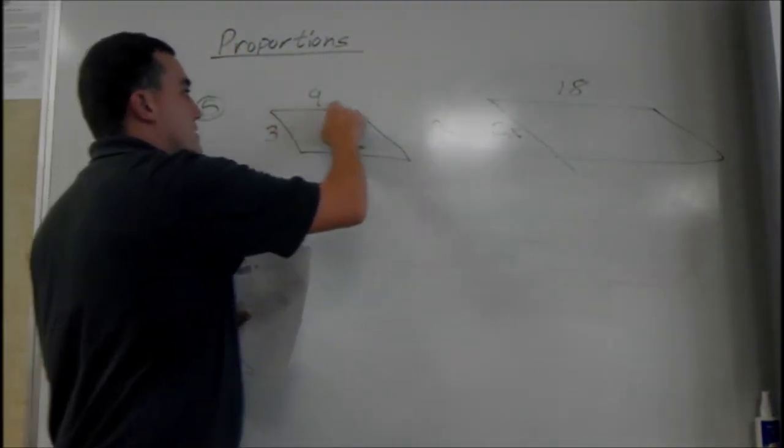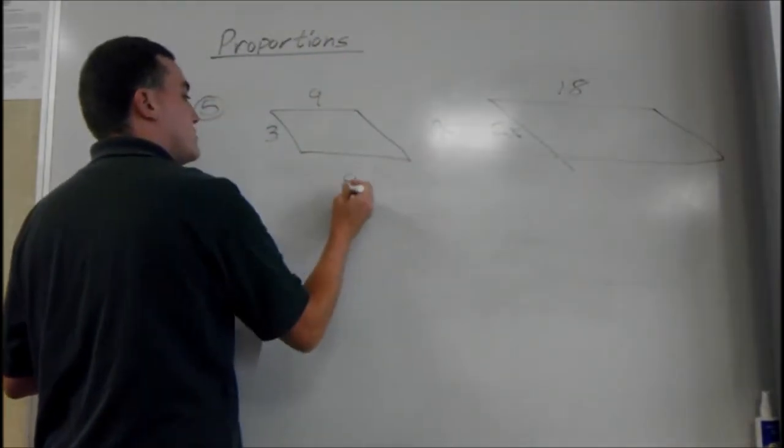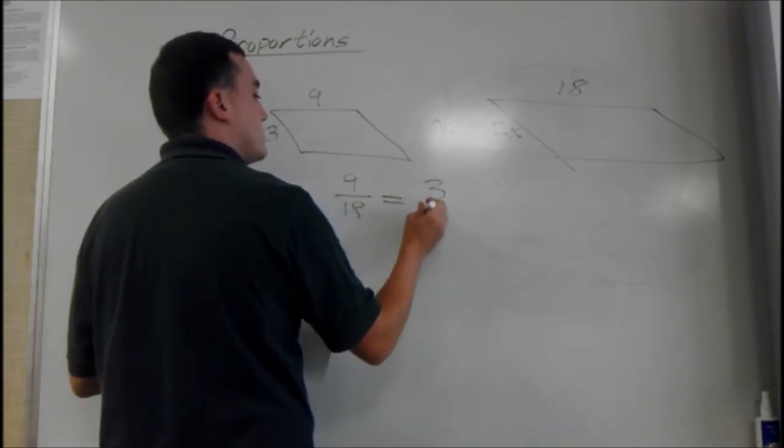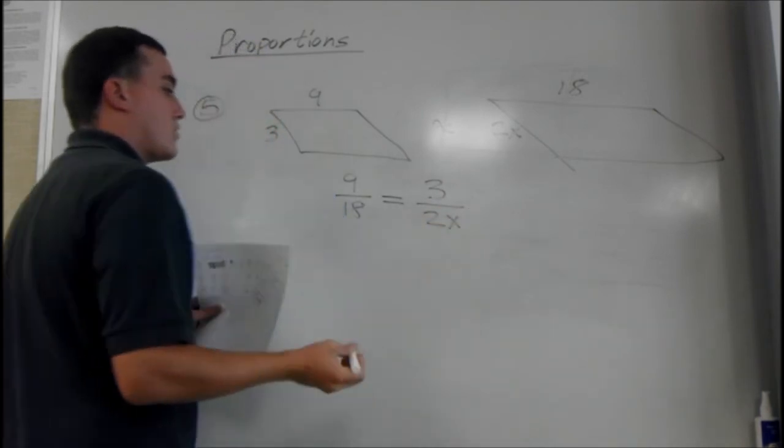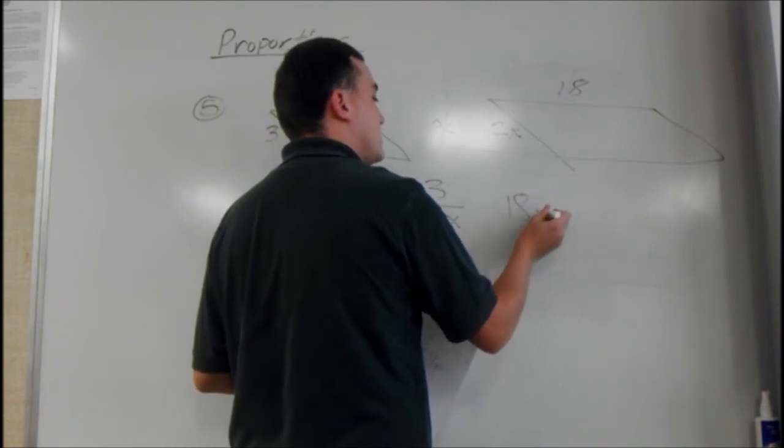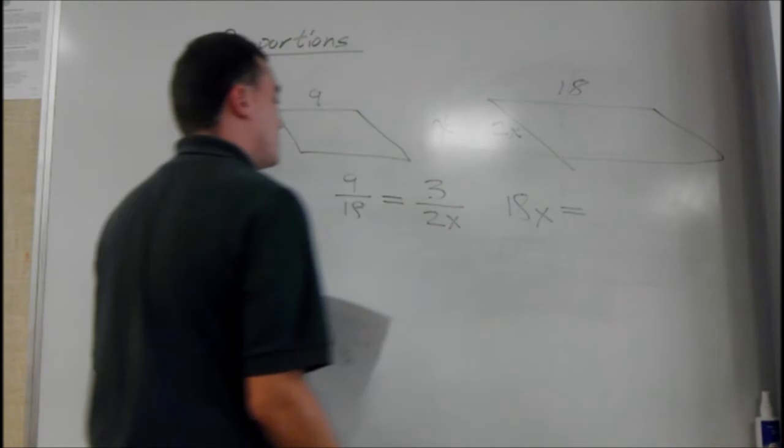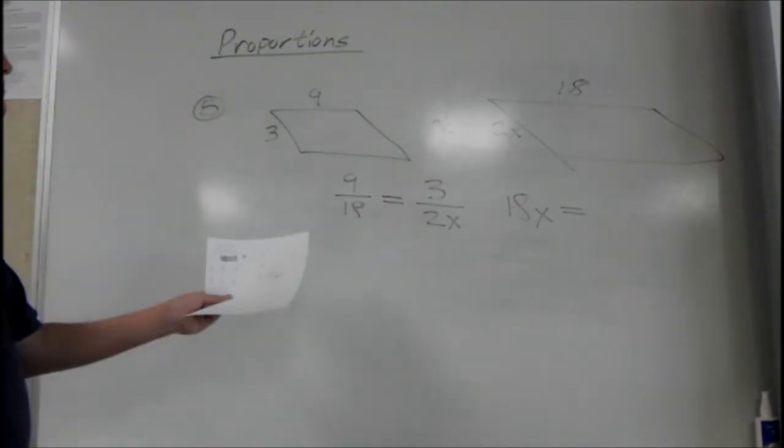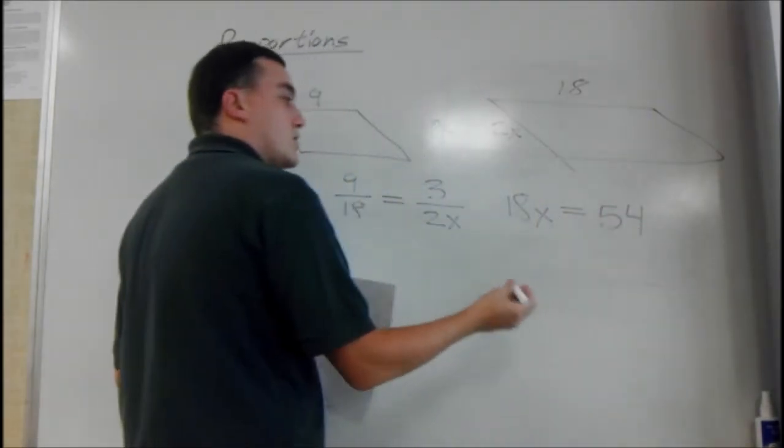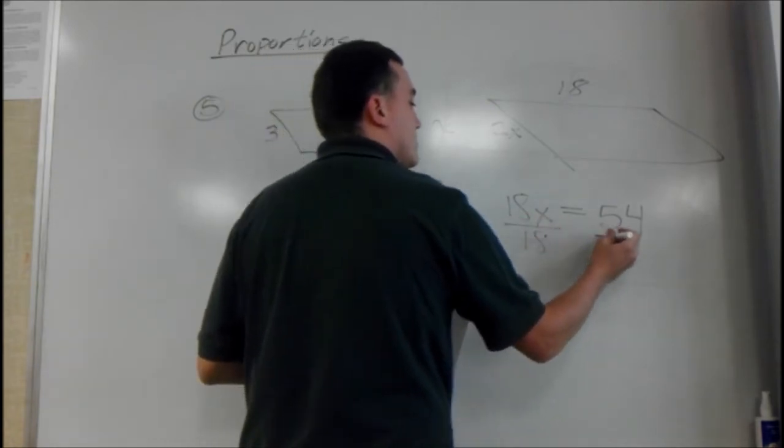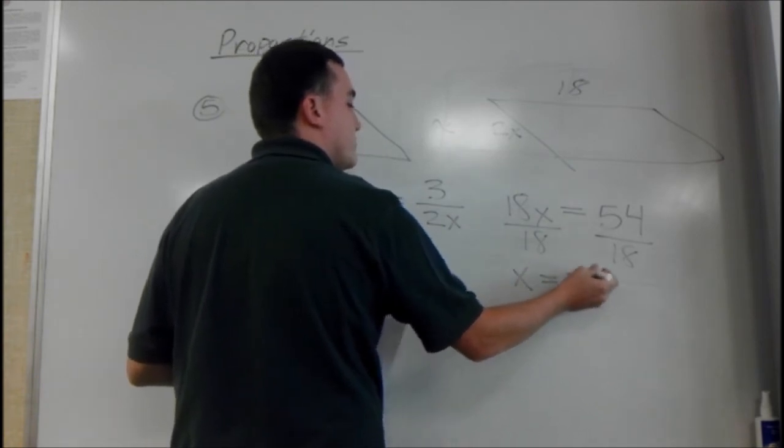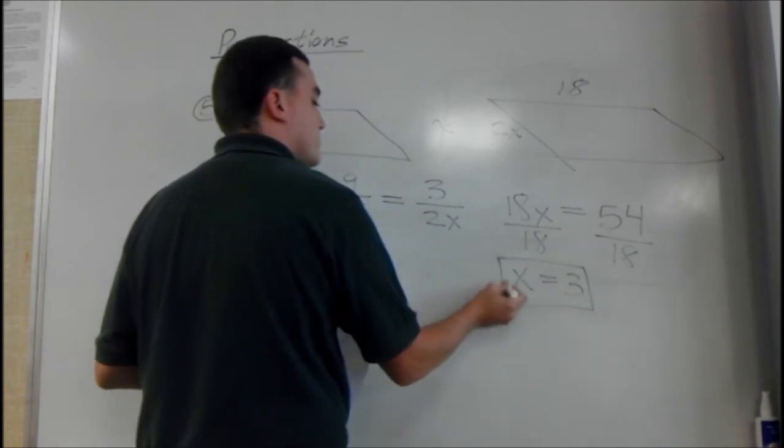Same thing. Set up the proportion. 9 over 18 equals 3 over 2x. Cross multiply. So 9 times 2x is 18x equals 3 times 18 is... Well, 18 plus 18 is 36. Plus 18 again is 54. Then we divide by 18 on both sides. And x will equal 3.